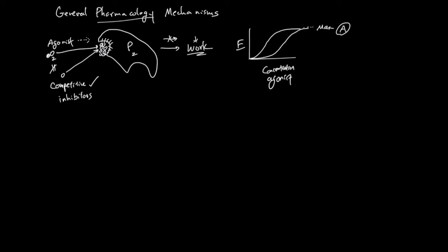There is going to be a rightward shift in the curve because you need to have more agonist to win against the competitor. So the second curve is agonist plus competitive inhibitor administered together. Now let's talk about the second pocket — the allosteric pocket.